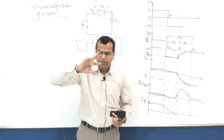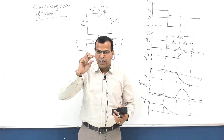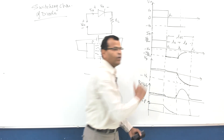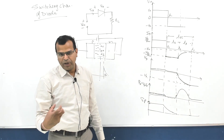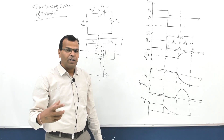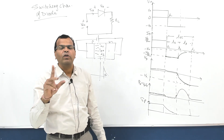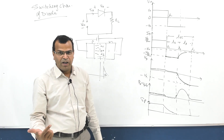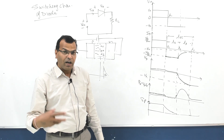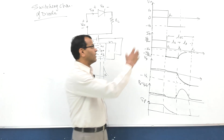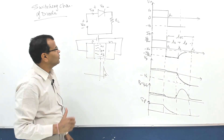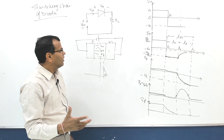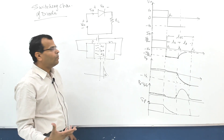There can be an objective-type question in engineering services prelims: maximum power dissipation in a P-N junction device occurs during the transition period. If you are switching on and off a device, the switching losses will be high as compared to the continuous on or continuous off losses. Switching losses in P-N junction based devices are high compared to continuous conduction losses. This concept is important when discussing transistors and MOSFETs, so please remember the switching characteristic of a diode.